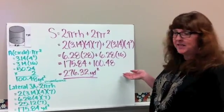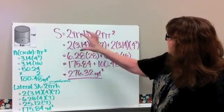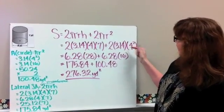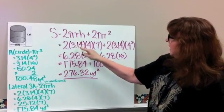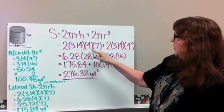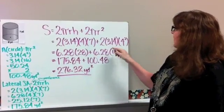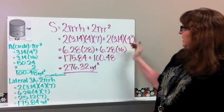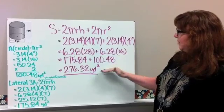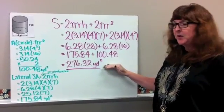So this is the third example. So if you use the formula here, this is what you should have got. You should have did your 2 times your pi, times your radius, which is 4, times your height, which is 7, plus your two circles. Bring it down and put it together, and you get 276.32 yards squared.